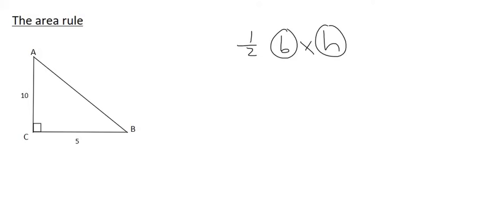So, with this example that we can see over here, the 90 degree is over there, and so the two sides you would choose would be the 10 and the 5. You would just choose one of them as your base, it doesn't really matter, and one of them as your height, and you would get an answer of 25 as the area.